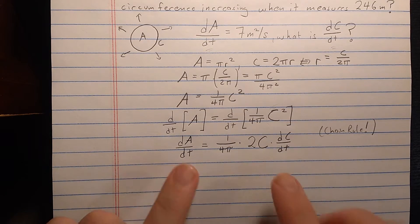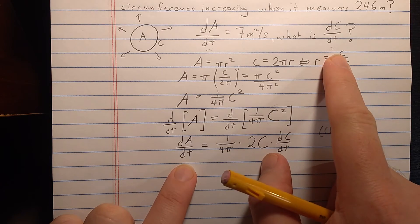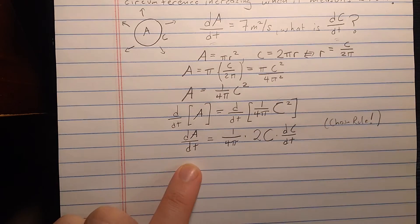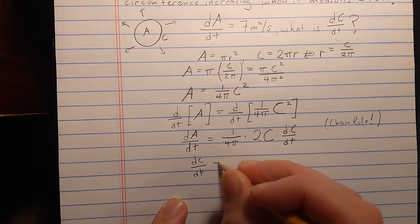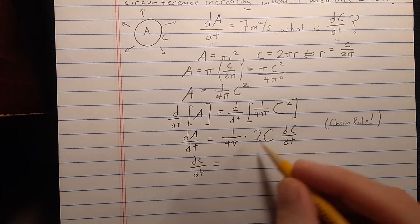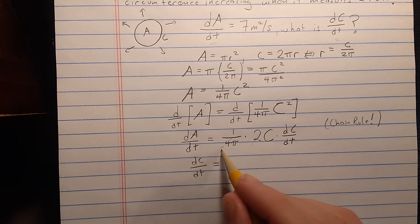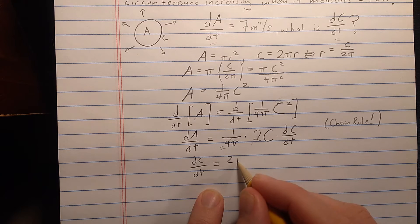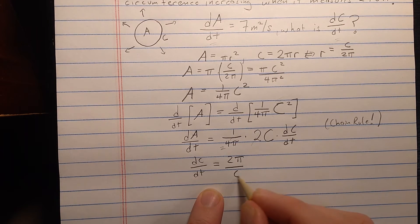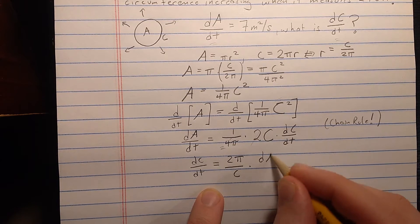Now I have a relationship between the two derivatives. I'm interested in dC/dt, so let's solve for it. Canceling and rearranging gives: dC/dt equals 2π over the circumference times dA/dt.